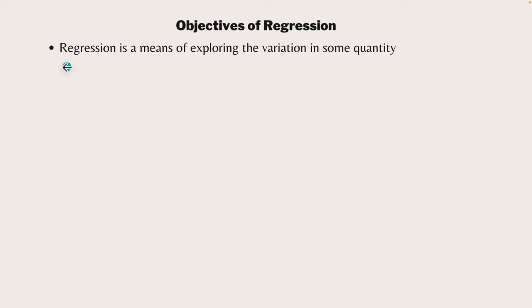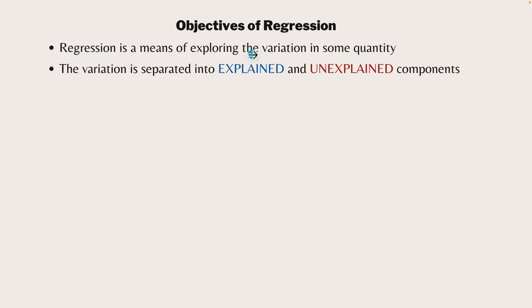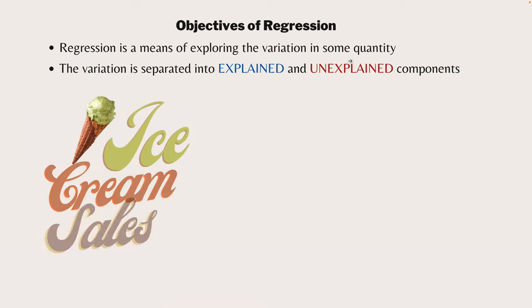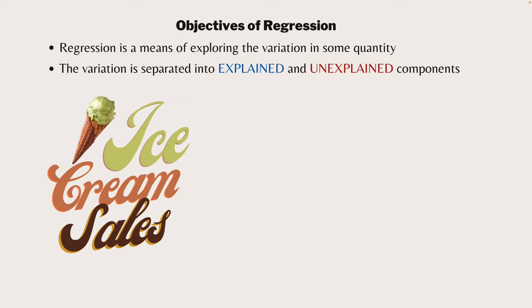Let's dive into the objectives of regression. We can start with a little definition: regression is a means of exploring the variation in some quantity. Maybe you're interested in figuring out why heart disease varies, or why interest rates are going up or down. That variation - the way it moves - we have to separate it. And this is what regression does. I'm going to use the example of ice cream sales of a particular vendor throughout the entire video today.